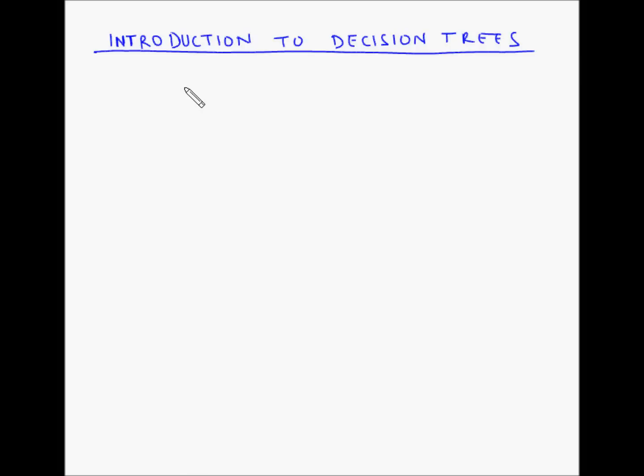In this video, let us understand the concept of decision trees. Decision making can be classified into two types. First is static decisions.